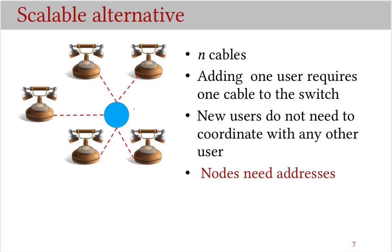A scalable alternative is to add a switch and connect these phones to the switch. The job of this switch is to connect the caller and callee links. This alternative reduces the number of cables from n choose two to just n cables. Now adding a new user requires connecting only one cable to the switch, and new users do not need to coordinate with any other user. Since the switch needs to connect incoming call request to the desired telephone, the telephones need to be assigned unique addresses. This was not a requirement in our previous design.